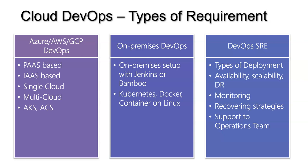DevOps is a vast subject and it has its own different roles and responsibilities based on the type of job description. As we know, there are plenty of tools available for DevOps — it could be on-premises, Azure, AWS, or GCP. There are plenty of tools available for monitoring, for CI/CD pipelines, for code repos, Jenkins, Bamboo, and Azure has its own server.